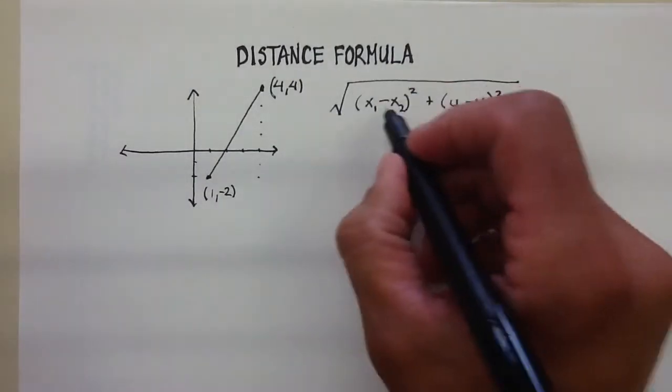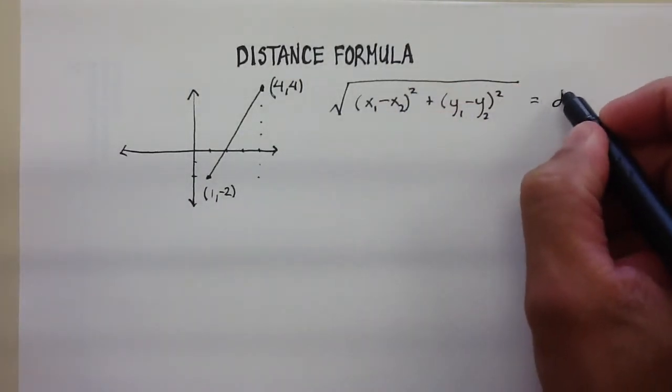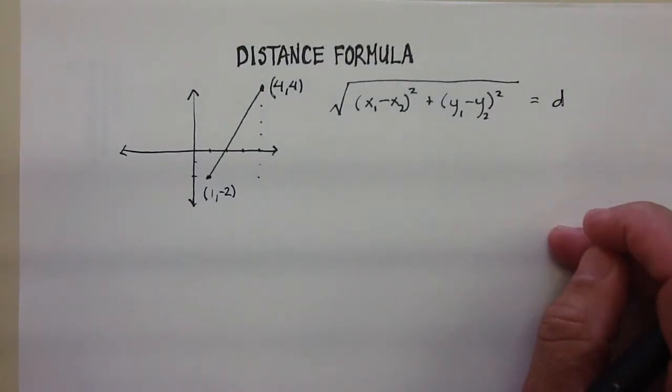The square root of those two things added up, and that's equal to the distance.